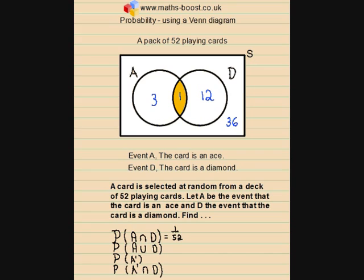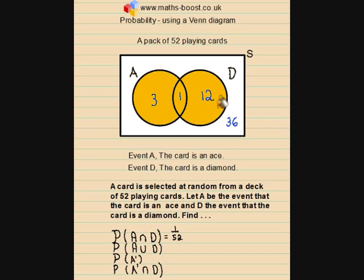Now we'll look at the probability of A union D. This asks for the probability of the card being either an Ace, or a Diamond, or the Ace of Diamonds. This region includes three, plus one, plus twelve outcomes, giving us sixteen outcomes out of fifty-two. So the probability of A union D is 16/52.